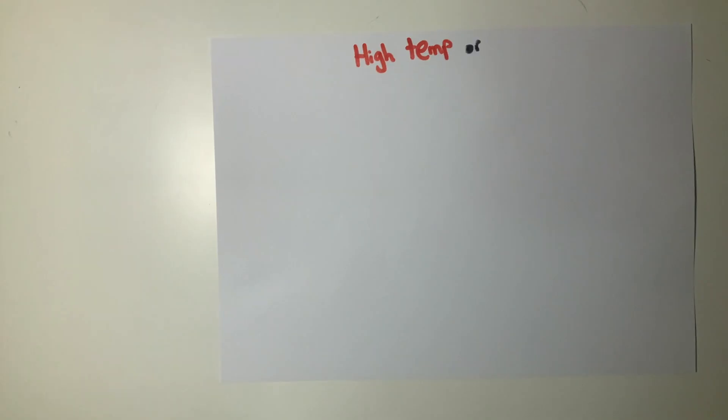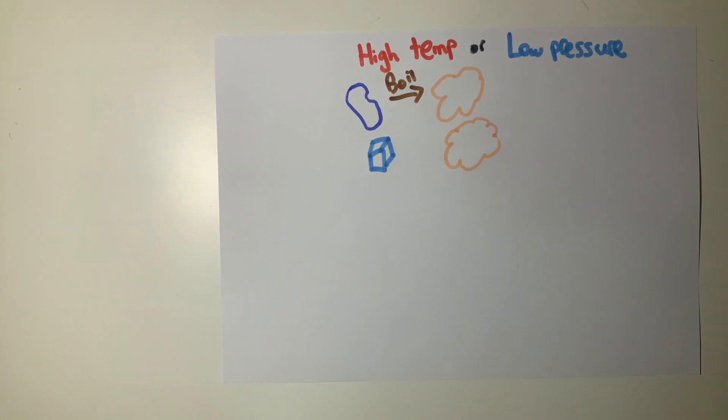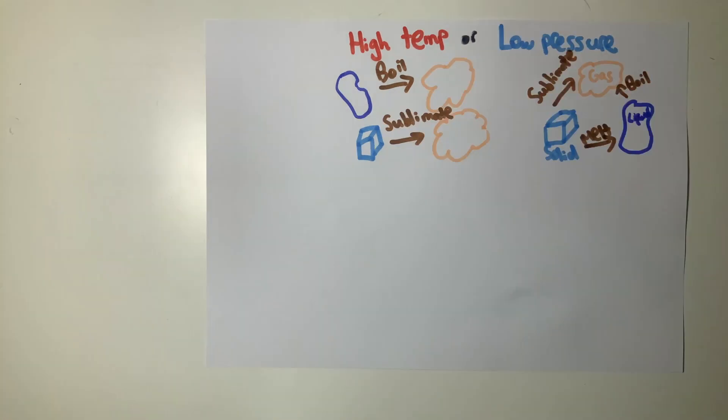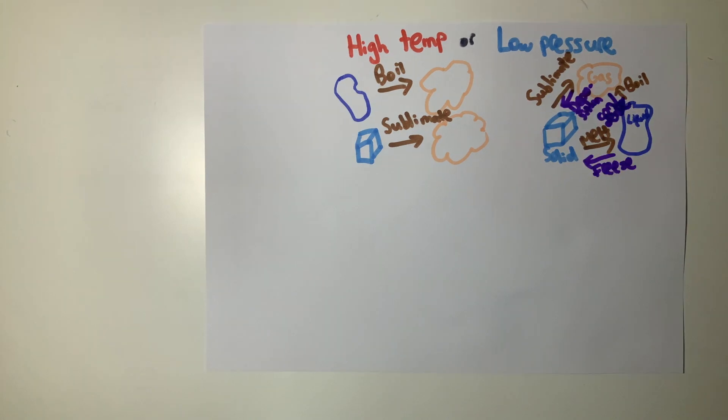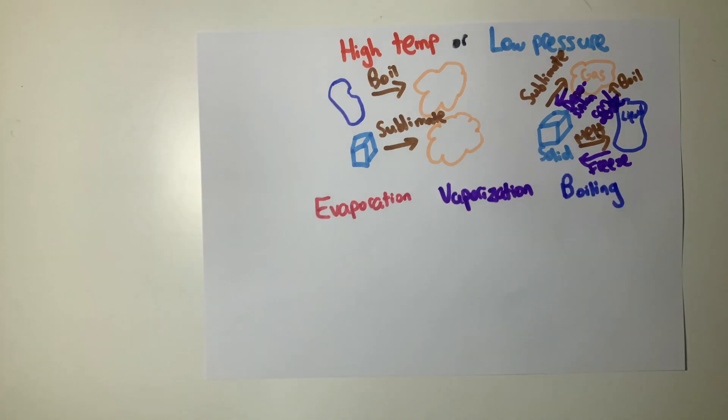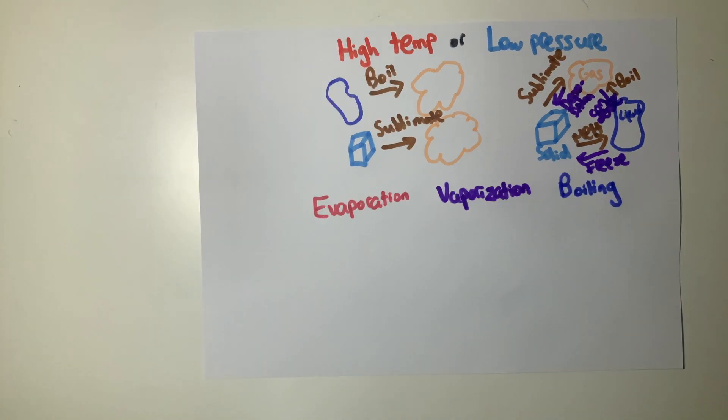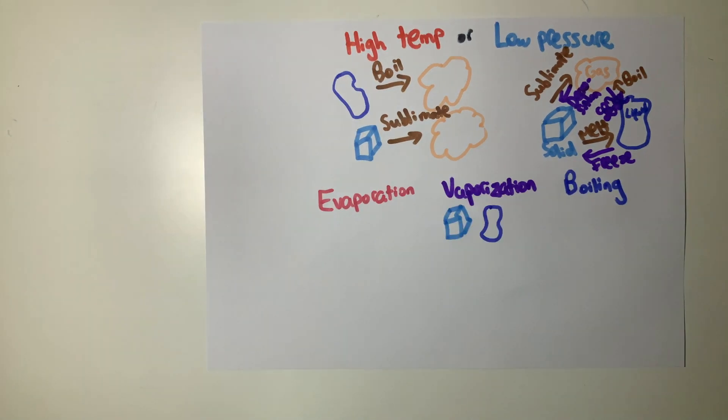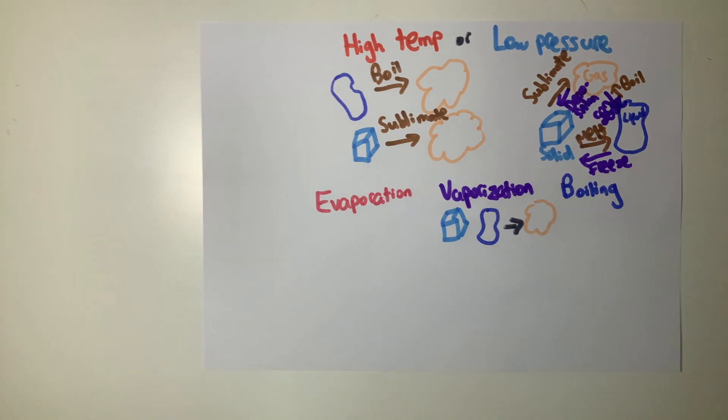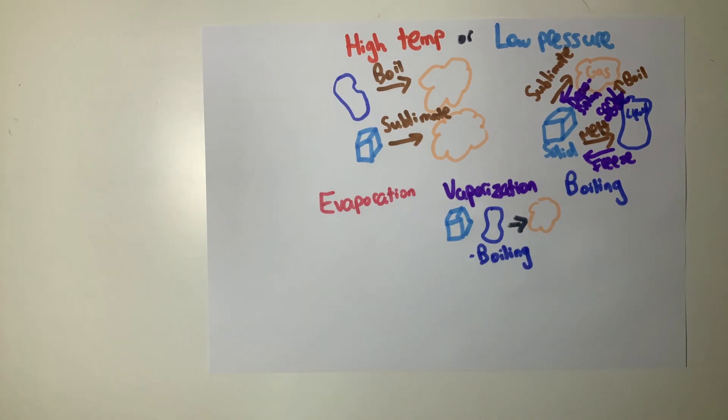If a liquid reaches a high enough temperature or a low enough pressure, it undergoes a state change known as boiling. If a solid undergoes a state change directly to a gas, the solid is said to have gone through sublimation. A common question to ask is: what is the difference between evaporation, vaporization, and boiling? In a nutshell, vaporization is a general term to describe a solid or liquid undergoing a state change into a gas, which includes boiling, while evaporation is a gradual state change of a liquid into a gas.